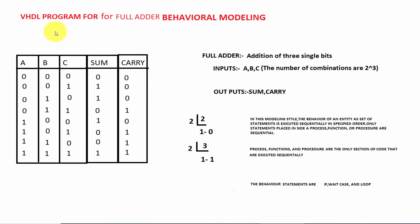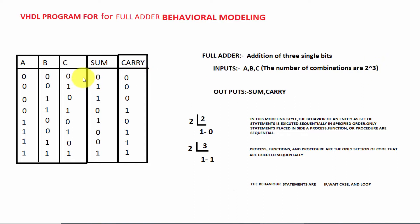Good morning to all. This is a VHDL program for full adder using behavioral modeling. A full adder is the addition of three single bits. In full adder, A, B, C are the inputs, and sum and carry are the outputs. With three inputs there are 2 to the power 3, meaning 8 total combinations.